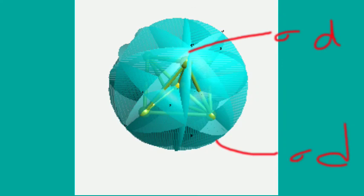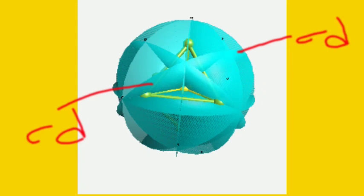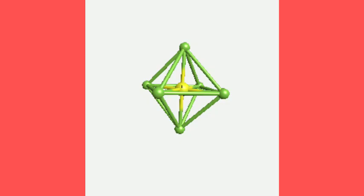There are 6 sigma D dihedral planes. What do these dihedral planes do? They bisect two C2 angles. We have 6 C2 axes labeled a, b, c, d, e, f, and the dihedral planes bisect between pairs: ab, bc, cd, de, ef, and fa. Each dihedral plane bisects the angle between adjacent C2 axes.